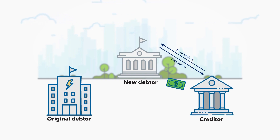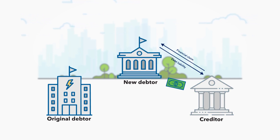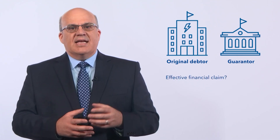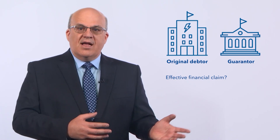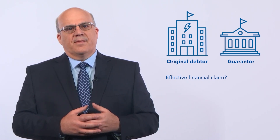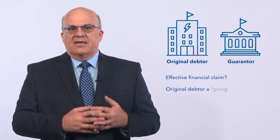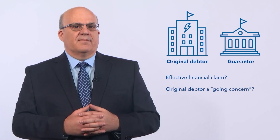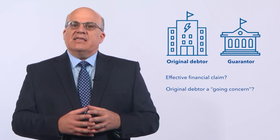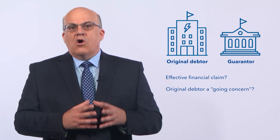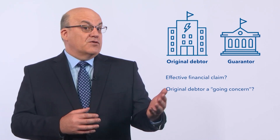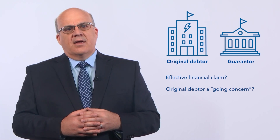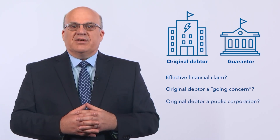What happens after the debt assumption between the original debtor and the guarantor depends on several factors. Is there an effective financial claim or agreement established between the guarantor and the original debtor? Is the original debtor still a going concern? In other words, is it an entity that is still in business or one that will be operating for the foreseeable future? Is the original debtor a public corporation?